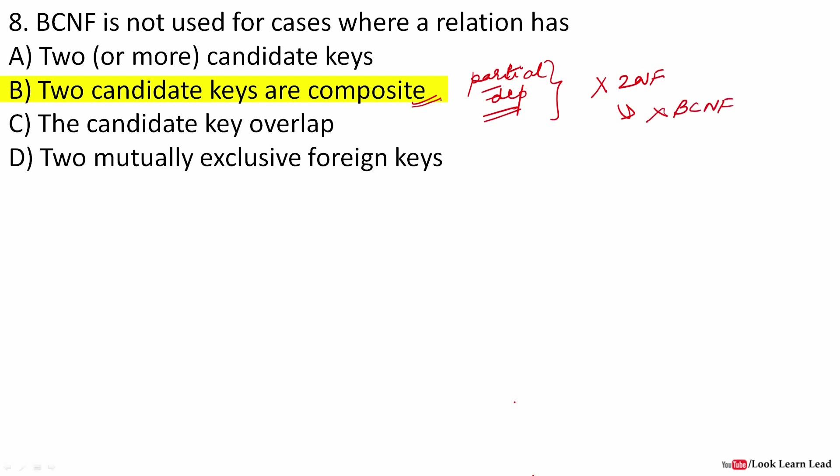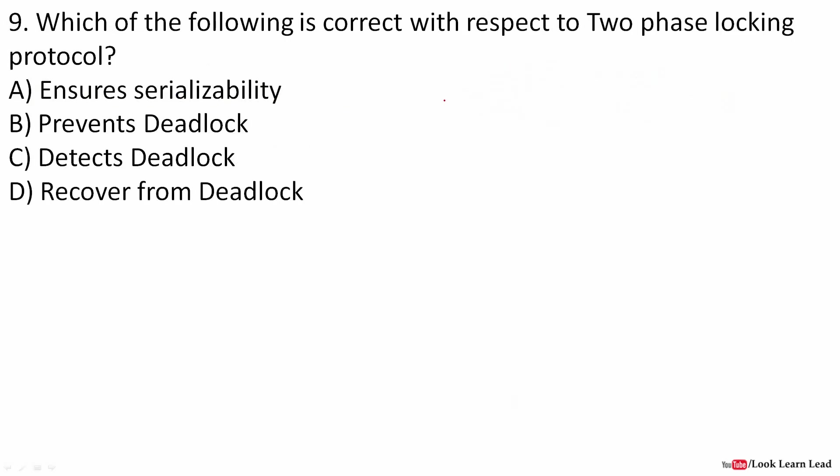Which of the following is correct with respect to two-phase locking protocol? Two-phase locking protocol has two phases: one is called the growing phase and the second phase is called the shrinking phase. In the growing phase, the transaction obtains locks. In the shrinking phase, the transaction releases locks, and it ensures serializability.